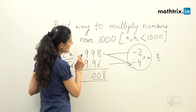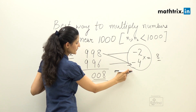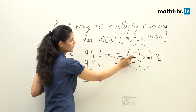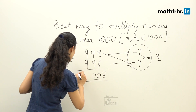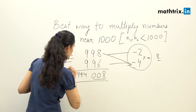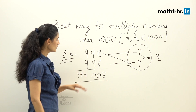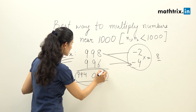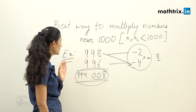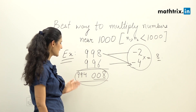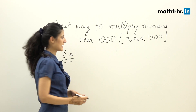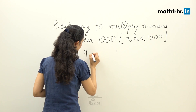Step number three: we do the cross addition, where we add 998 to minus four, or 996 to minus two, and the answer will be 994. So the combined answer for 998 multiplied by 996 is 9 lakh 94 thousand and 8.